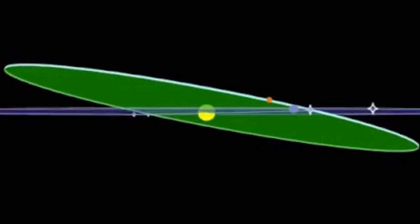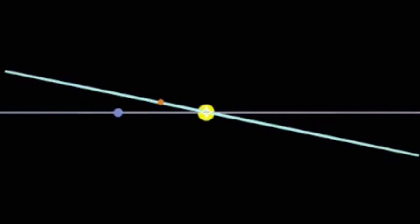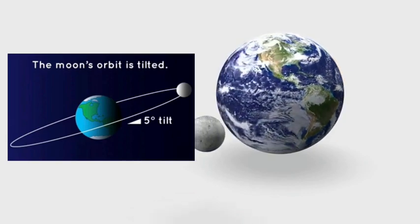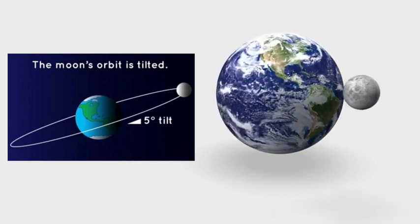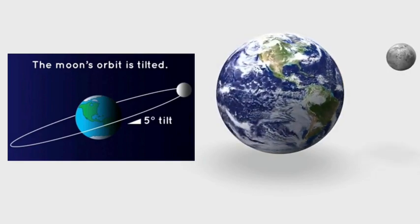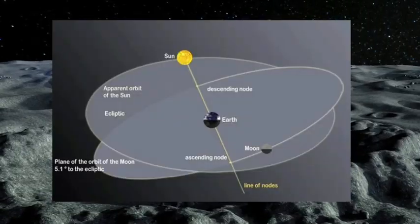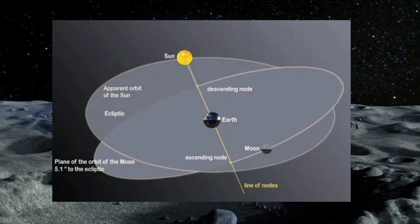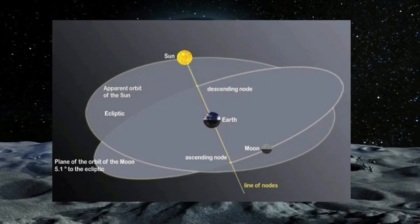For half of the month, the Moon is slightly higher than the plane of the ecliptic, and for the other half, it drops below it. This means there are two crossover points, or nodes — an ascending node and a descending node — that mark where the Moon goes from one side to the other. It is these nodes that move over the course of the 18.6-year cycle, slowly rotating around the planet in one complete revolution.